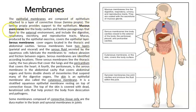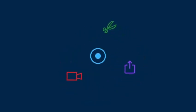Mucous membranes are the membranes that cover areas in our body that have contact with the exterior — for example, in our mouth. The inside of our mouth is not the same as the skin on our face, because the inside of our mouth is going to be a mucous membrane. There's another membrane called the cutaneous membrane, which is the part of your skin.